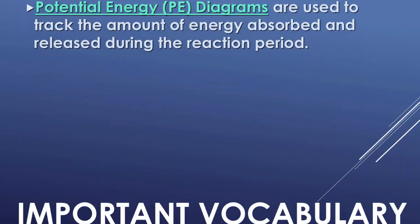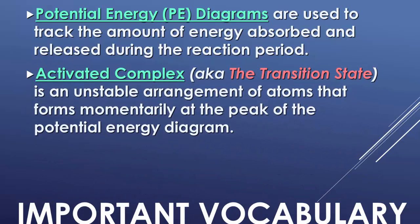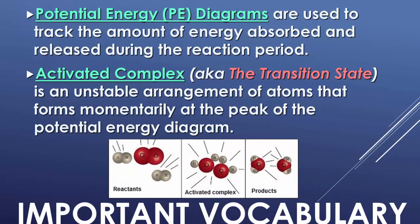So this is the important vocabulary. Potential energy diagrams are used to track the amount of energy absorbed or released during the reaction period. And the activated complex, which we also call the transition state, is an unstable arrangement of atoms that forms momentarily at the peak of every potential energy diagram. We're starting with two moles of H2 gas with one mole of oxygen gas, and we're noticing in the middle picture, that's our activated complex. It's a funky formation that is a hybrid of your reactants and a hybrid of your products.